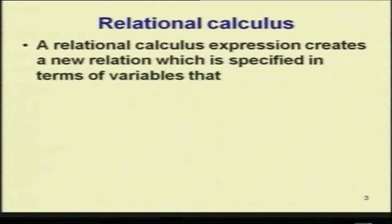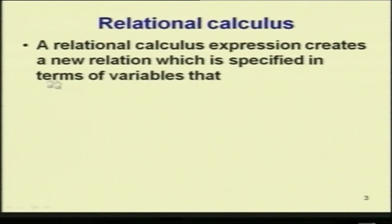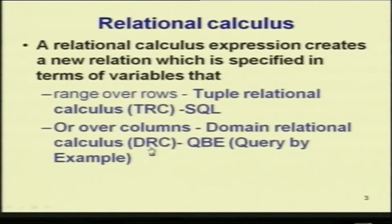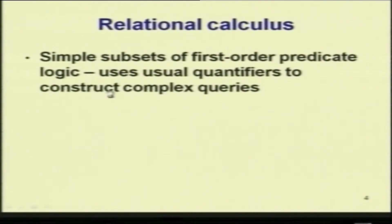A relational calculus expression creates a new relation. Whether it is relational algebra or relational calculus, the formal models of databases use a table, perform some operation on the table, and the output is again a table. Relational calculus similarly creates a new relation specified in terms of a variable that ranges over rows, called tuple relational calculus, or over columns, called domain relational calculus or DRC. QBE (query by example) is based on domain relational calculus.